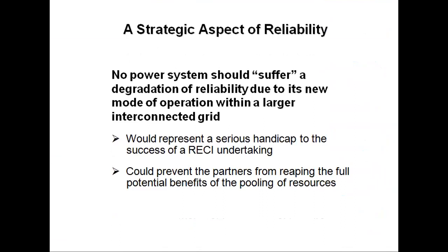The strategic aspects towards reliability are: no power system should suffer a degradation of reliability due to its new mode of operation within a larger interconnected grid, as it would represent a serious handicap to the success of the RECA undertaking and would prevent partners from reaping the full potential benefits of the pooling of resources. The ambitious climate mitigation targets pursue a goal of limiting global average temperature increase to well below 2 degrees above pre-industrial levels, with a further aim to limit the increase to 1.5 degrees.